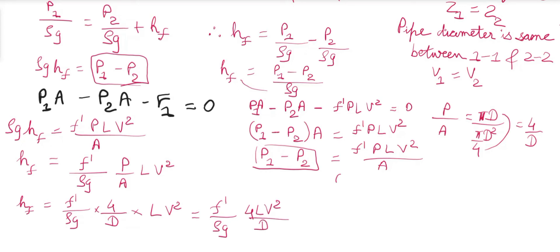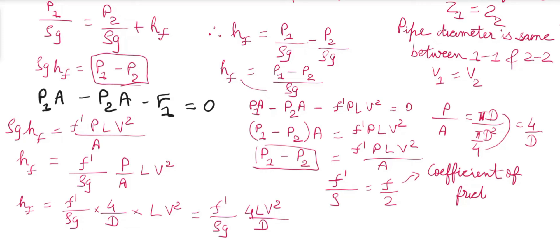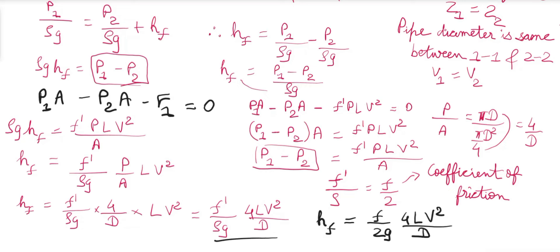Now F'/ρ = f/2, where f is the coefficient of friction and F' is the friction factor. So Hf = (f/2g) × 4LV²/D, which we write as 4fLV²/(2gD).